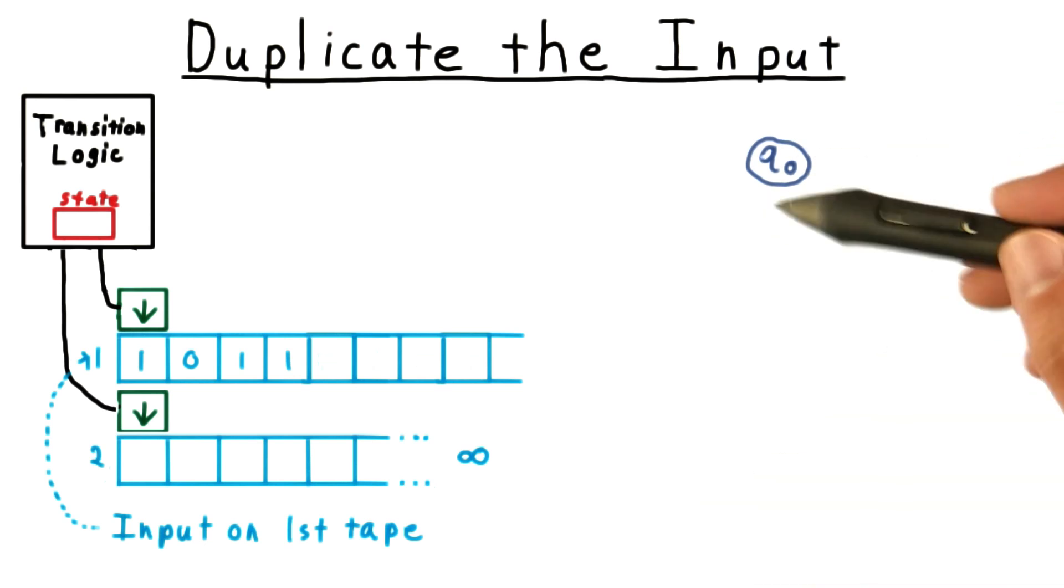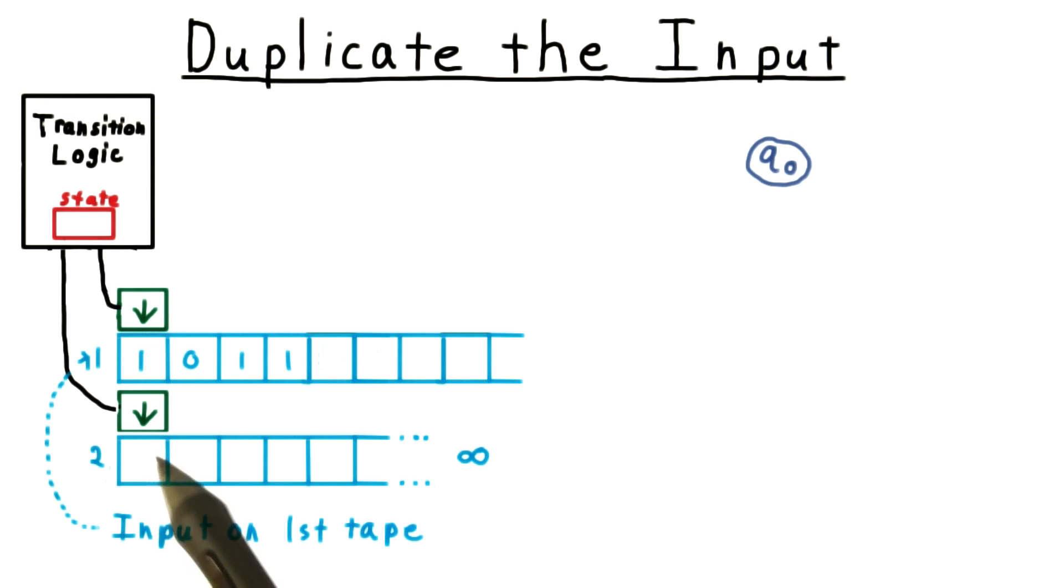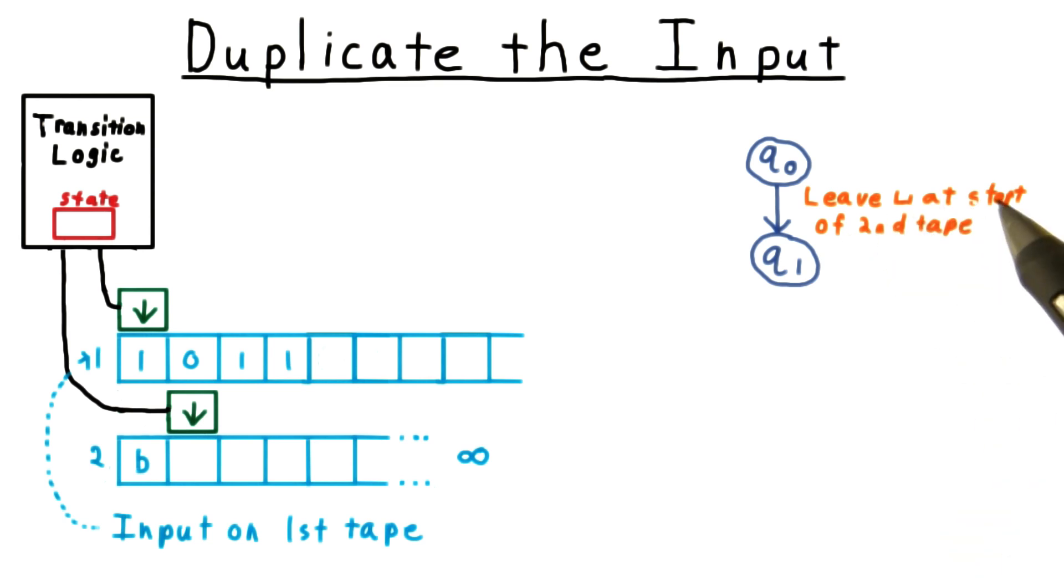Of course, we need to start in some fixed initial state. And the first thing we need to do is to mark the beginning of this second tape, since we're going to have to rewind it at some point. So regardless of what symbol we read on the first tape, we're going to write a blank symbol to the first slot on the second tape.